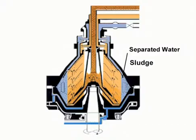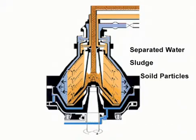Separated water, sludge and solid particles, which are heavier than the oil, are forced towards the periphery of the bowl and collected in the sludge space.